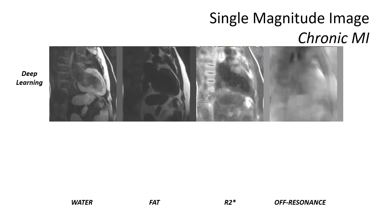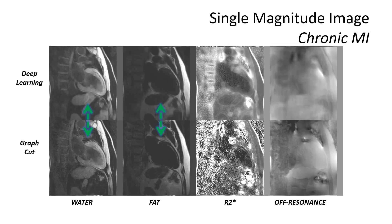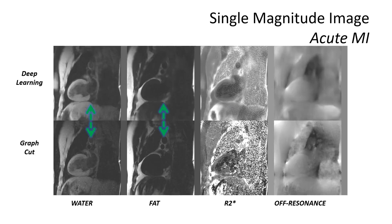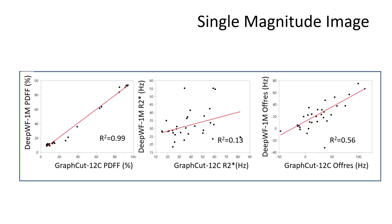A subject with a chronic MI shows similar quality. Water and fat separation images are comparable and both depict fatty metaplasia, though in the R2 star map the fatty metaplasia is not depicted with deep learning. An example from a subject with an acute MI shows excellent water-fat separation, but the R2 star map and off-resonance map — which both depict intramyocardial hemorrhage in the graph cut method — do not depict this pathology at all with deep learning. Quantitative fat fraction values showed excellent correlation, while R2 star and off-resonance showed only weak correlations.